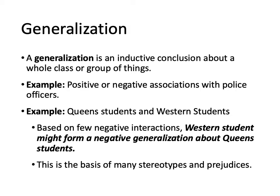This generalization is something you can apply to individuals. Another example: Queen students and Western students — it's a traditional rivalry. Queen students and Western students are always comparing, especially in previous years with homecoming celebrations or football games. Based on a few negative interactions, Western students might form a negative generalization about Queen students, and that becomes the basis of a stereotype. In reality, Western and Queen students probably have a lot more in common than different, but those generalizations build up over time — this is the basis of stereotypes and prejudices.